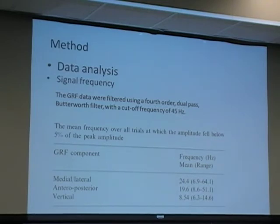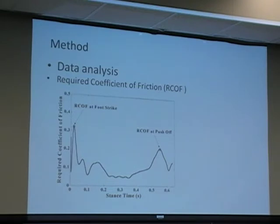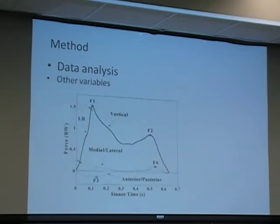In this table, you can see that the main signal of the GRF was low. There are three to seven variables we care about. First two are RCOF at heel strike and push-off. RCOF is calculated by dividing the shear force by vertical force. Here are five more variables: the first two are peaks of the vertical force, F3 and F4 are peaks of the anterior and posterior force, and the LR is the initial loading rate of the vertical force calculated from 10 to 90% of F1.